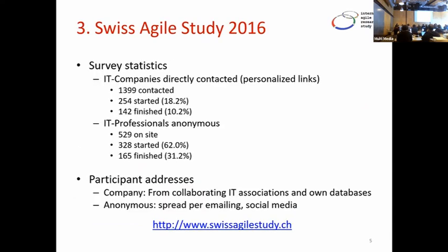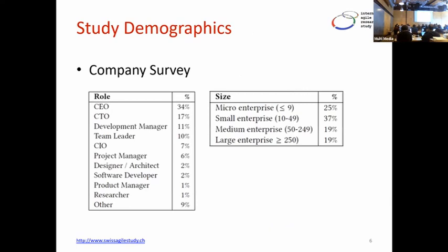The survey had just over 300 respondents — about 140 companies and 165 individuals. CEOs made up 34% of respondents. In terms of organization size, most were smaller companies — most had fewer than 250 employees, which may reflect some organizations in the room, similar to NIWA.